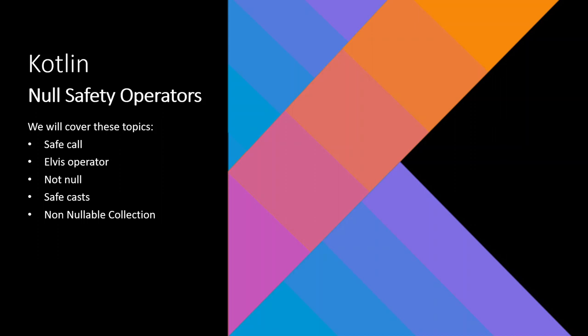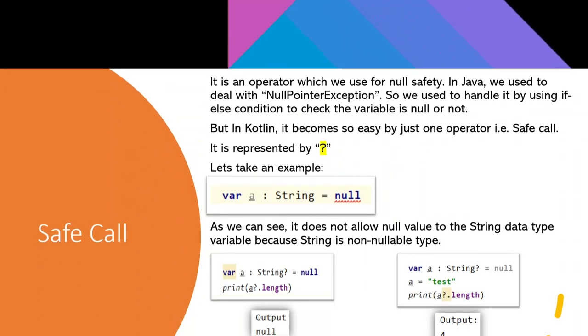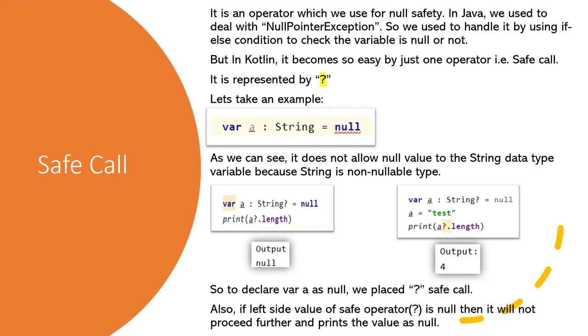So our first null safety operator is safe call. It is an operator which helps to deal with null pointer exceptions. It checks if the variable is null or not every time we use it.